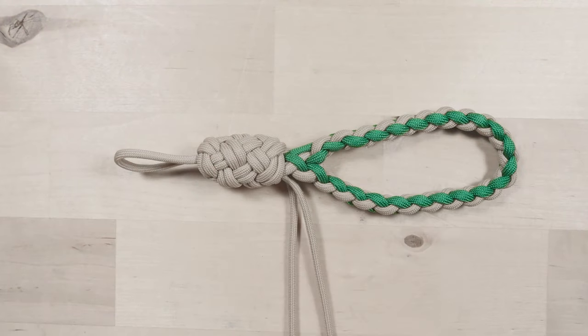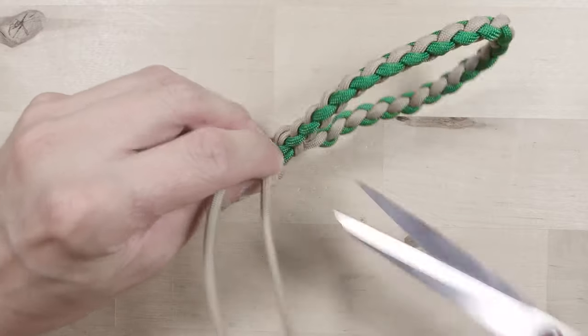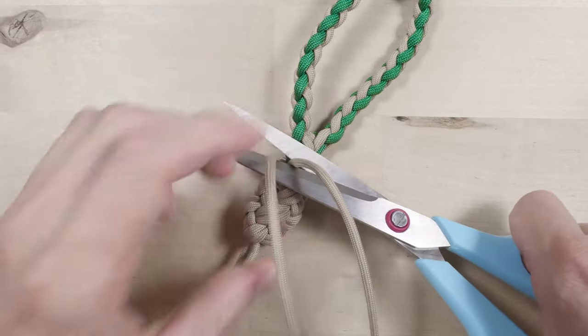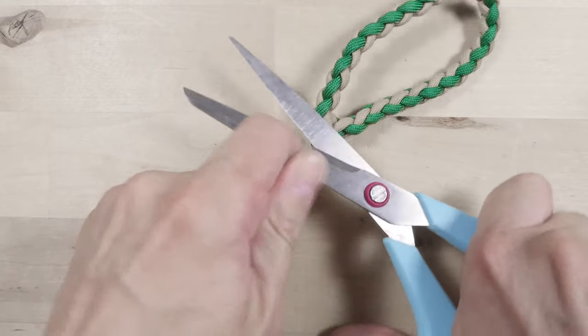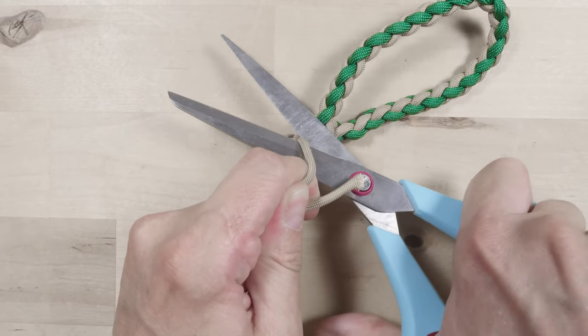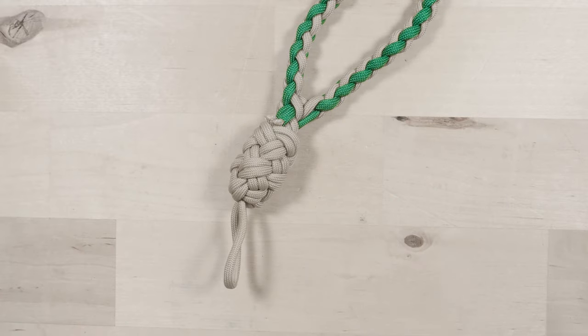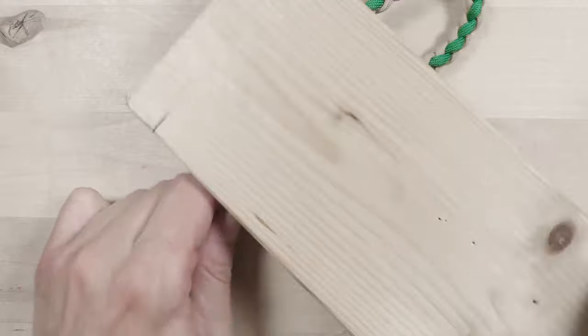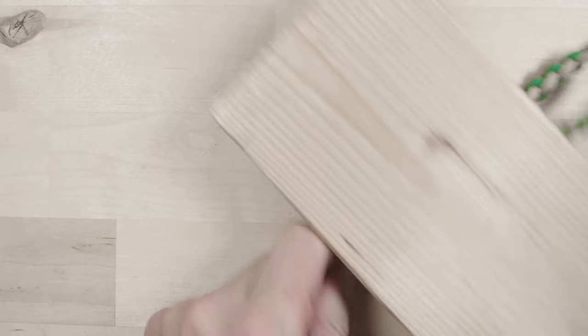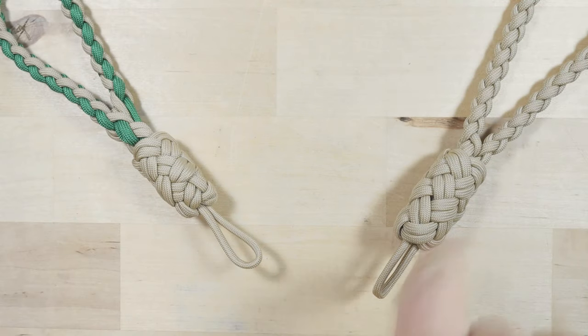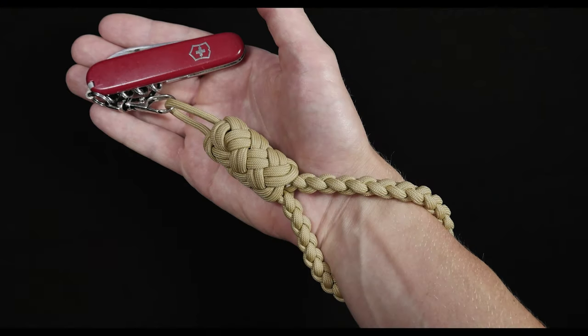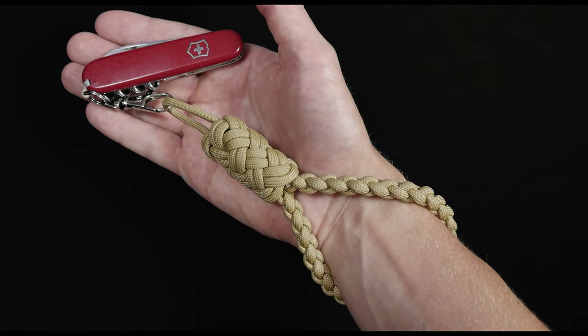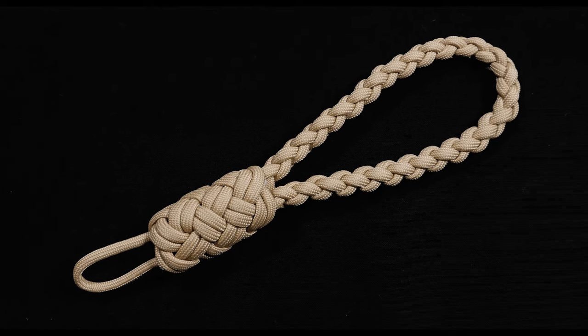Once your knot is tightened up, trim the two ends as close to the knot as possible. Then roll the knot under a plank to get a more consistent look. And that's our project for today. Thank you for joining me, consider supporting the site on Patreon, and I'll see you next time.